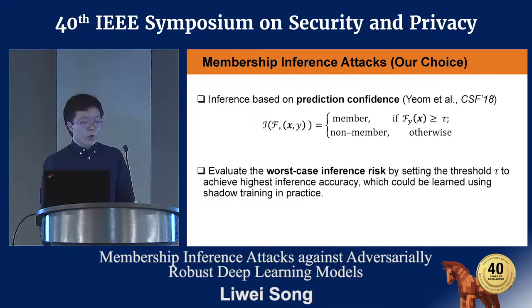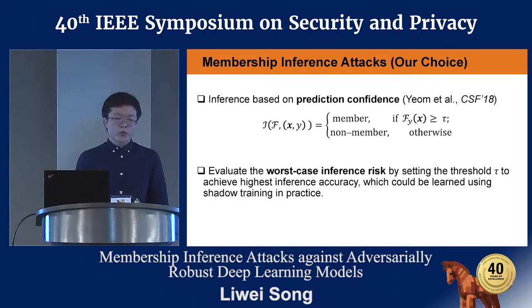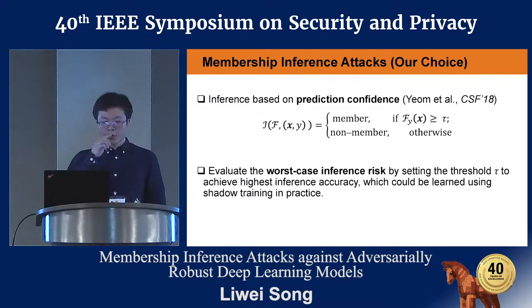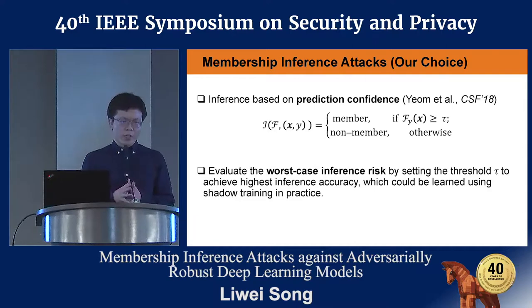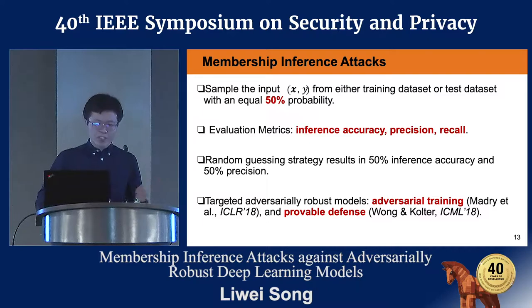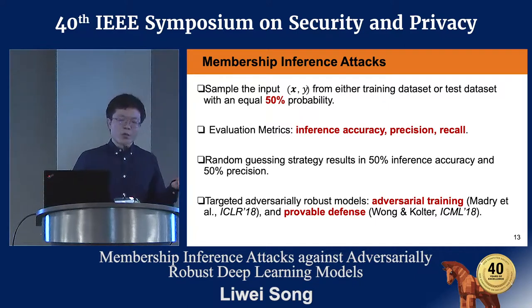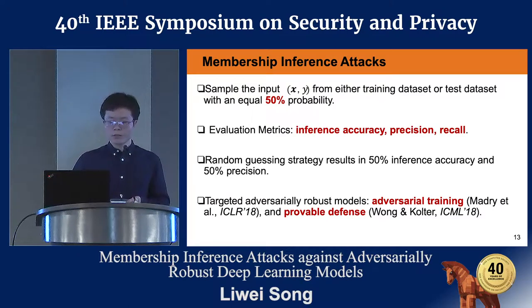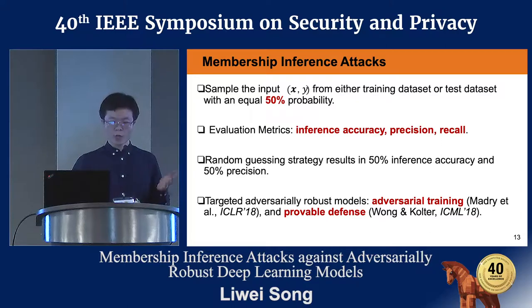Furthermore, we consider the worst-case inference risk, where we try different threshold values and choose the one with the highest inference accuracy. In practice, we can also follow Shokri's shadow training method to choose the threshold. For our setup, we sample inputs from either the training dataset or test dataset with equal 50% probability, and we measure membership inference accuracy and recall, which are typical metrics in membership inference attacks.